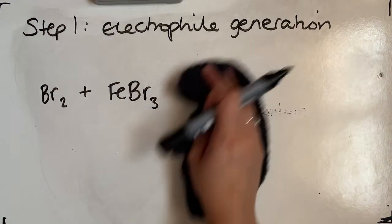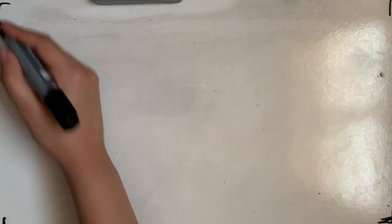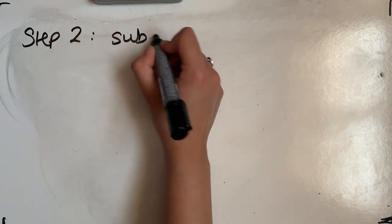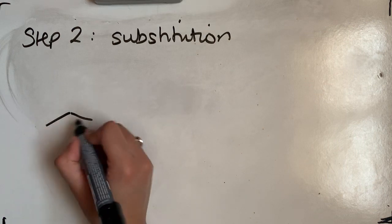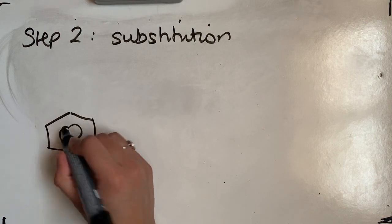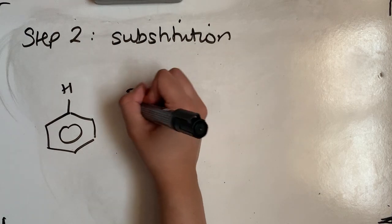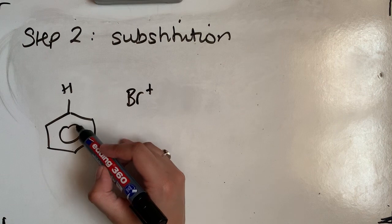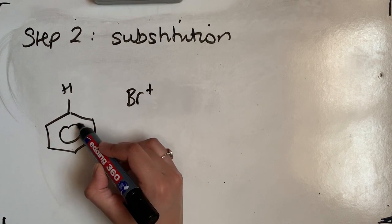We now move to step two, where we do the mechanism of this, where we do the substitution part. So step two is substitution. We have our benzene ring, got that hydrogen at the top, got our electrophile present over here. So again, the curly arrow starts from the delocalized ring in the middle, going to our electrophile.